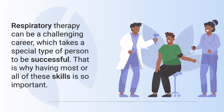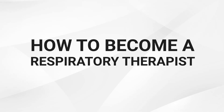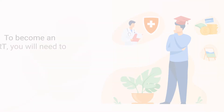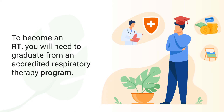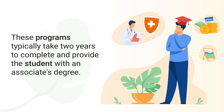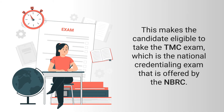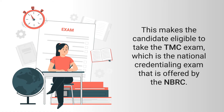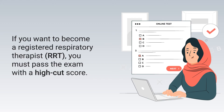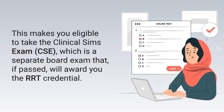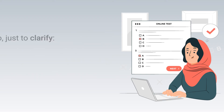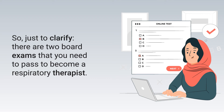To become a respiratory therapist, you will need to graduate from an accredited respiratory therapy program. These programs typically take two years to complete and provide the student with an associate's degree, making the candidate eligible to take the TMC exam, which is the national credentialing exam offered by the NBRC. If you want to become a registered respiratory therapist, you must pass the exam with a high cut score, making you eligible to take the Clinical Sims exam — a separate board exam that, if passed, will award you the RRT credential. There are two board exams needed to become a respiratory therapist.